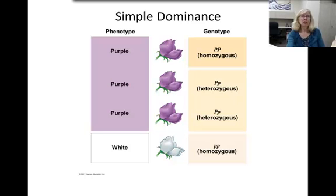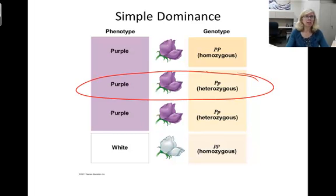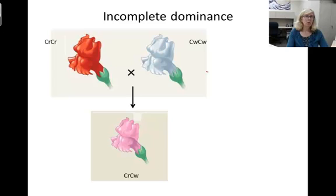We talked in our last video about simple dominance, where the heterozygote shows the trait of the dominant homozygous organism. But what's going on when a red snapdragon is crossed with a white snapdragon and the offspring are all pink?